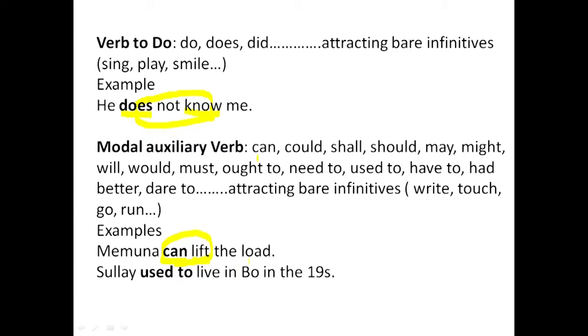Modal auxiliary verbs are the typical auxiliary verbs because they always have to assist. Verb to do, verb to be, and verb to have could be auxiliary verb or they could not be. But for modal auxiliary verb, it is actually the true auxiliary verb — it never changes. Components of modal auxiliary verb always assist. Another example: Sule used to live in Bo in the 90s. Used to is an auxiliary verb assisting the main verb live. Together they form a verb phrase. Used to is a verb we use to indicate past habitual activity — things we used to do but are no longer doing.